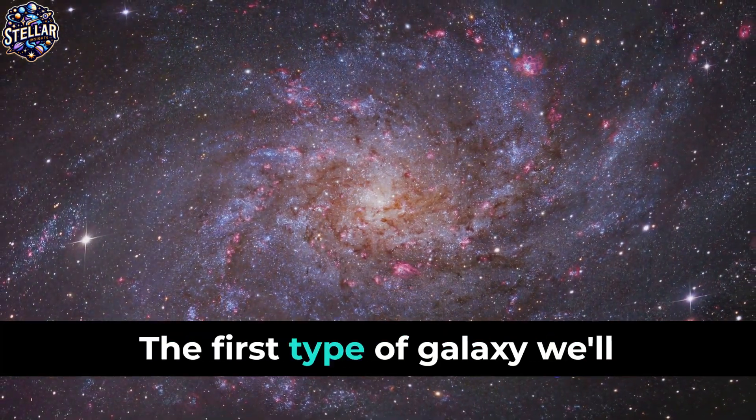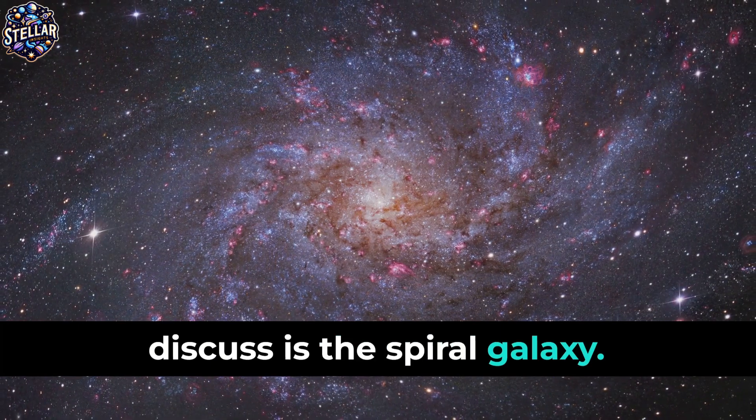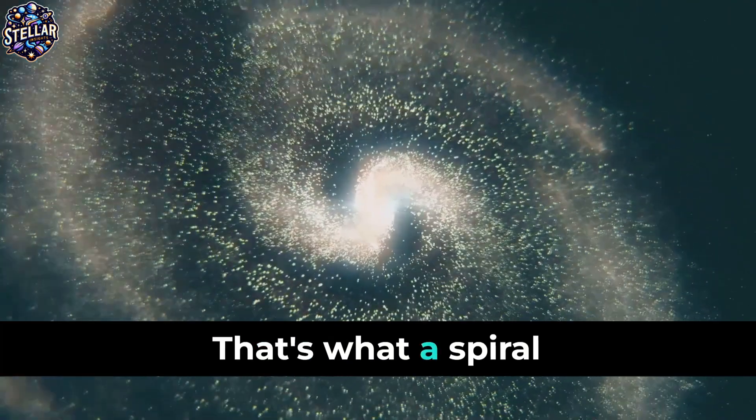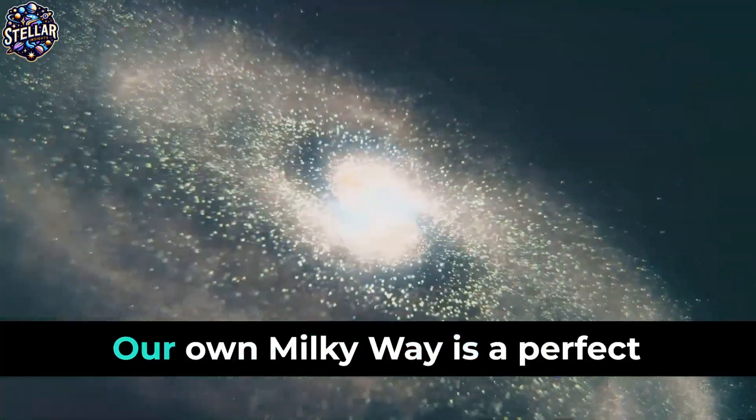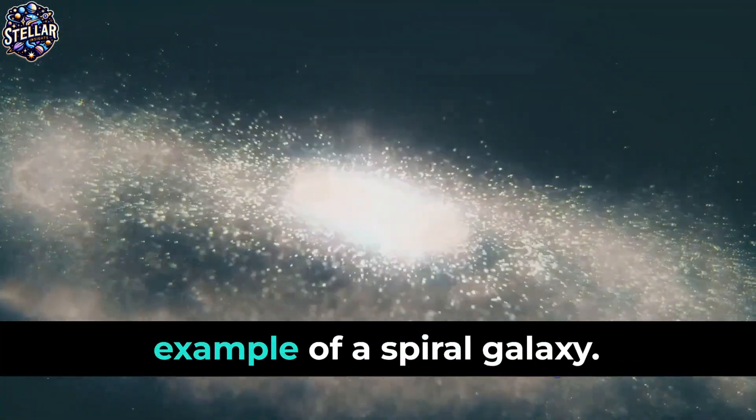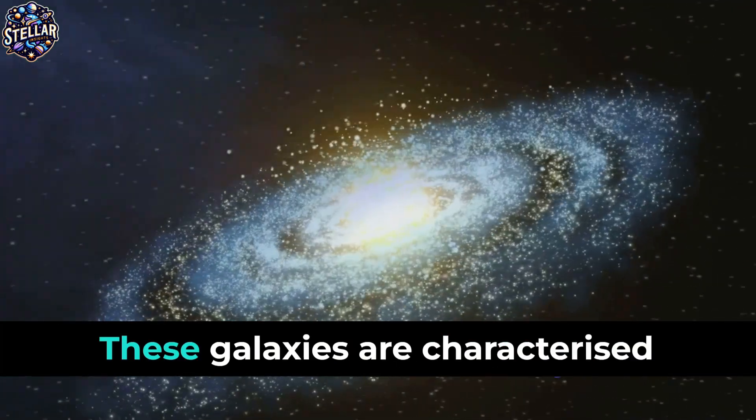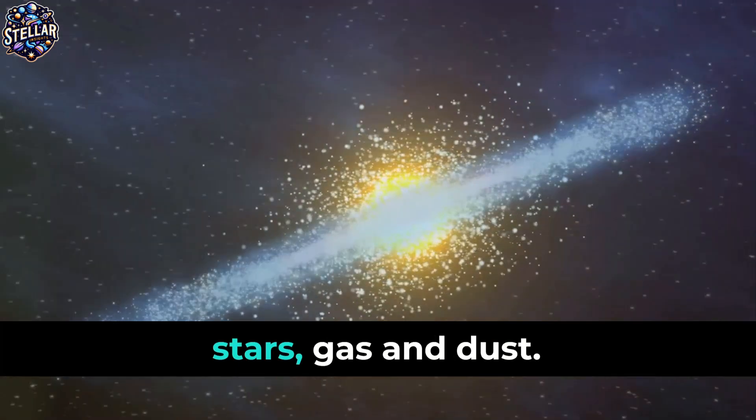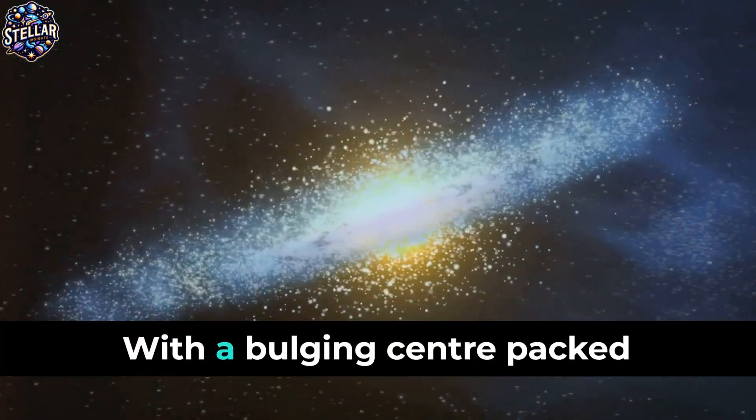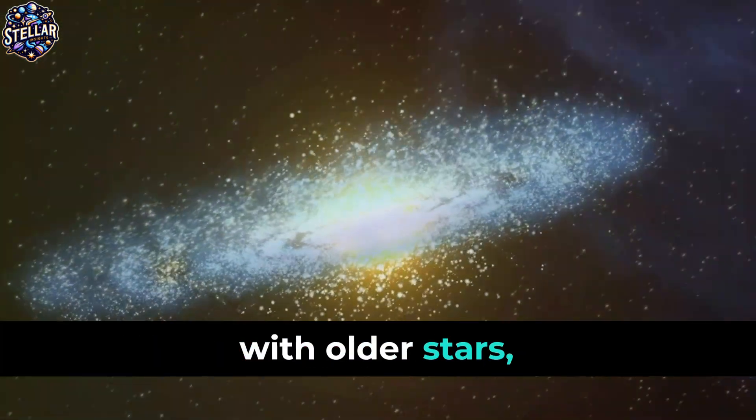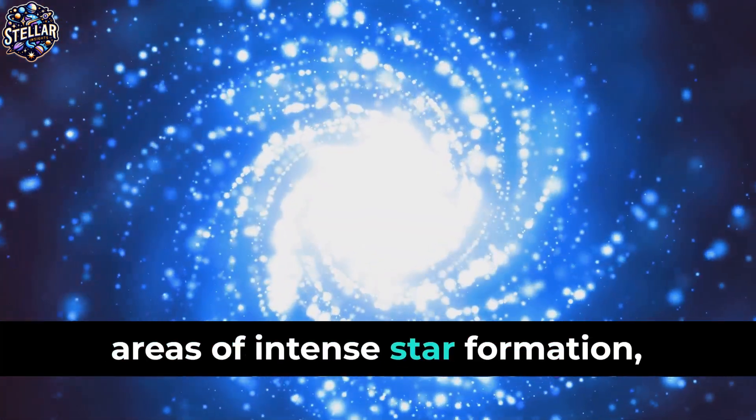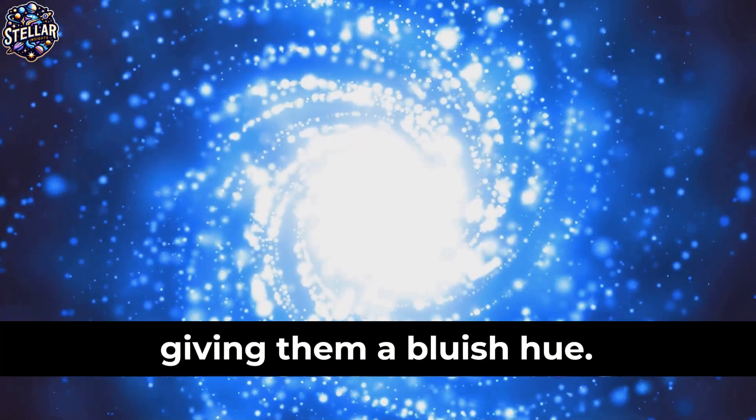The first type of galaxy we'll discuss is the spiral galaxy. Picture a spinning top with arms swirling out from the center. That's what a spiral galaxy looks like. Our own Milky Way is a perfect example of a spiral galaxy. These galaxies are characterized by their flat, rotating disks filled with stars, gas and dust, with a bulging center packed with older stars. The arms spiraling outwards are areas of intense star formation, giving them a bluish hue.